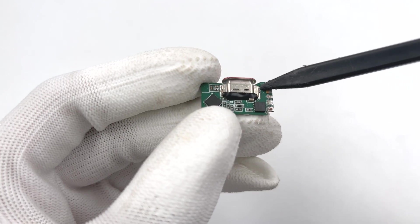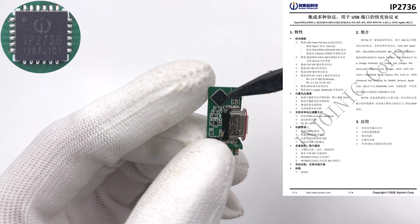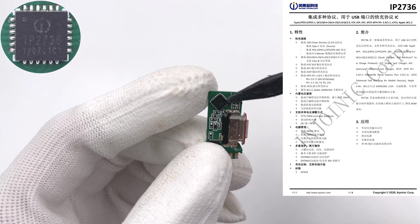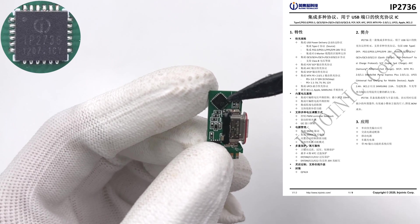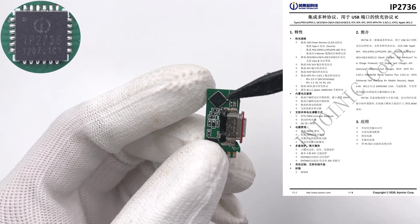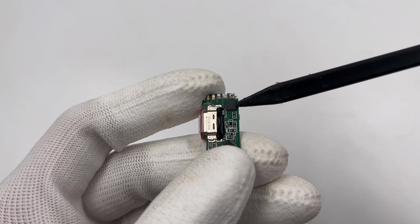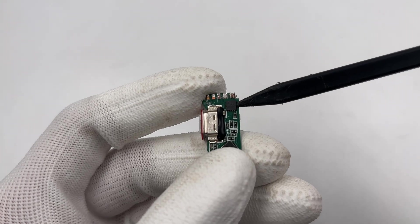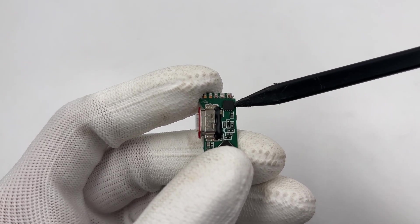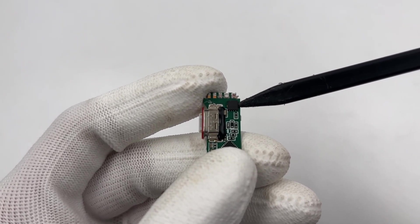This is the upper PCB. Let's see what's on it. The protocol chip is from Injoinic, IP2736. It can support PD3.1, PPS, QC5, and other fast-charging protocols. The VBUS MOSFET is from AOS and adopts DFN 3.3x3.3 package, 30V 2.3mΩ.